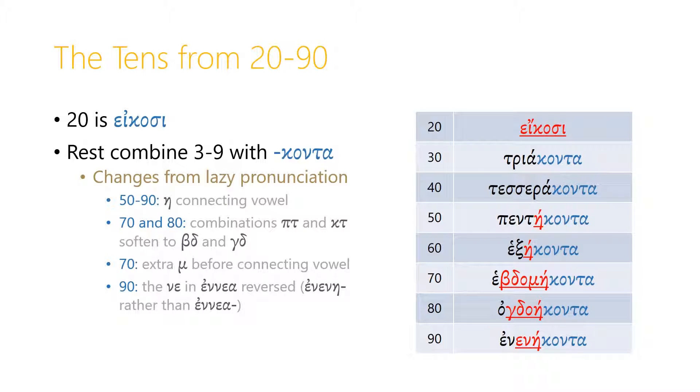From 50 on, we start to see some changes based on lazy pronunciation of the initial number. So 50 through 90 use an eta as a connecting vowel between the two numbers before the conta ending, and that's just in native pronunciation. So instead of pentaconta, we have pentaconta and hexaconta.